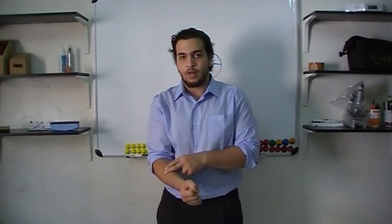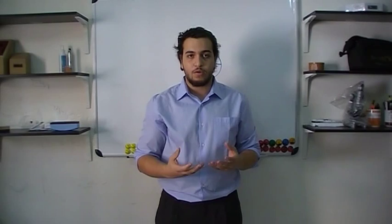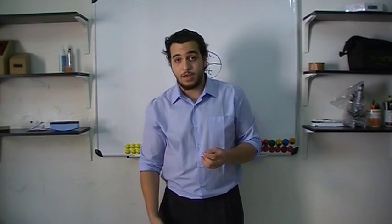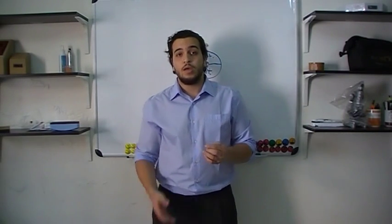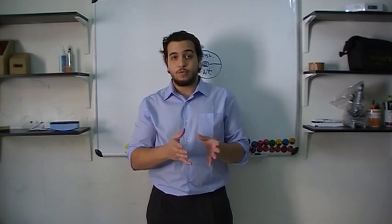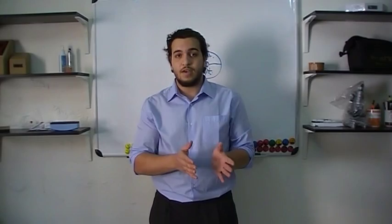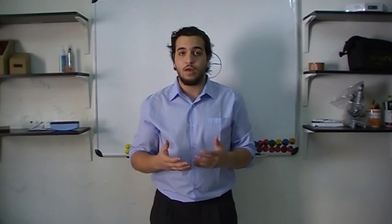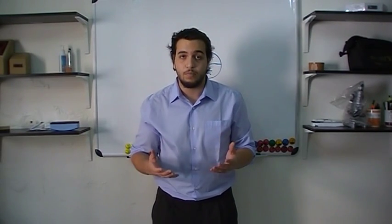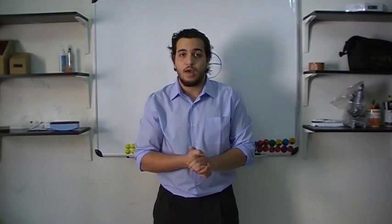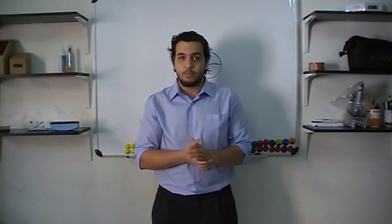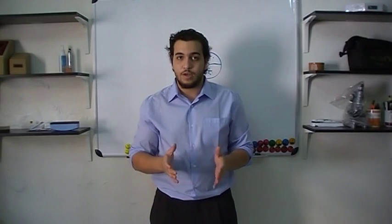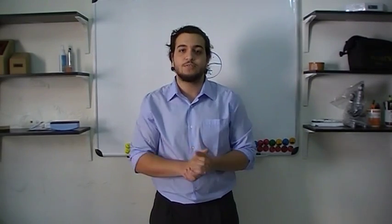As mentioned, we have one interosseous membrane between the radius and ulna. There is also another one between the tibia and fibula, but that will be explained in a separate class on the lower limb muscles. Thank you very much.